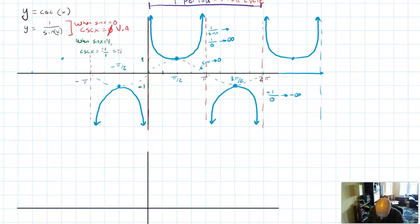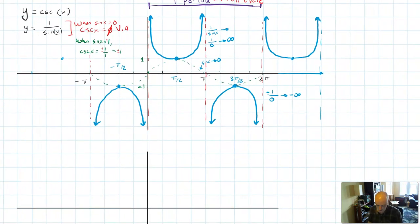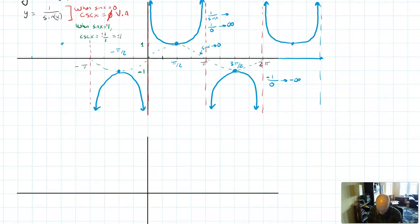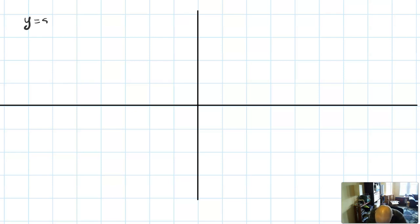Let's go ahead and move to the graph of secant, which is going to look almost exactly the same, except it's the reciprocal of cosine. So just like before, I'm going to graph a cosine graph very nicely in green right here.